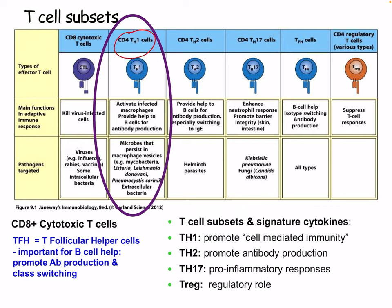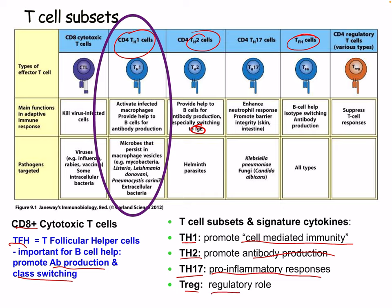We're focusing on CD4, and we'll have a lecture on Th2 as well. Just a reminder: we have our CD8 cytotoxic T cells, our TFH which are T follicular helper cells. These T follicular helper cells are important for B cell help and promote antibody production and class switching. We have different subsets — Th1, which promotes cell-mediated immunity; Th2, which promotes antibody production, usually IgE; Th17, which are pro-inflammatory; and Tregs, which have a regulatory role.